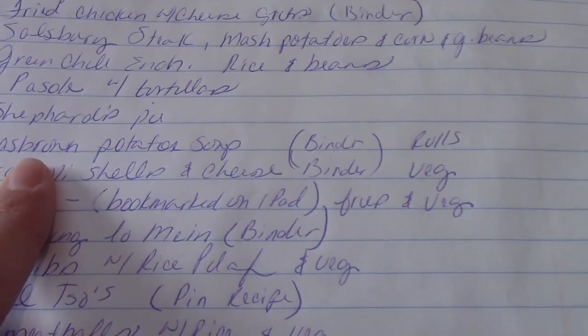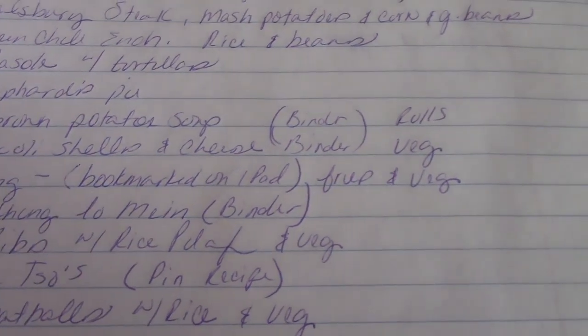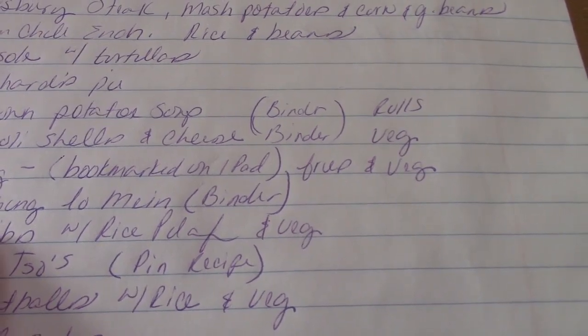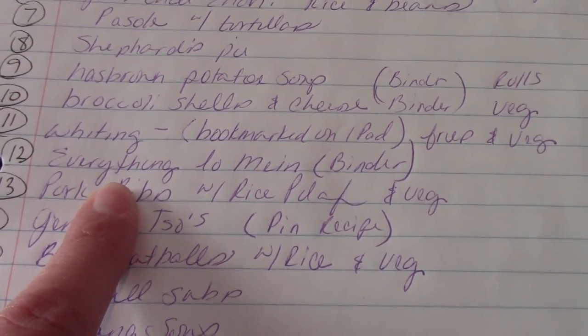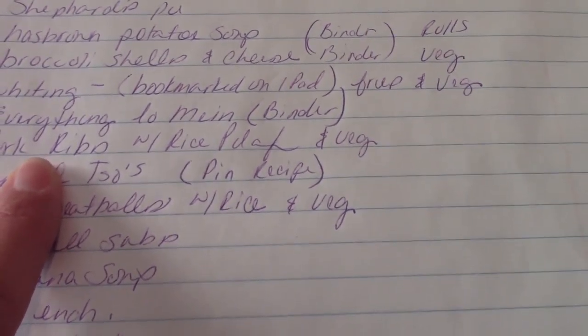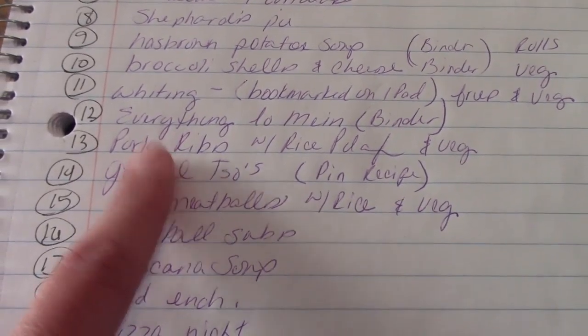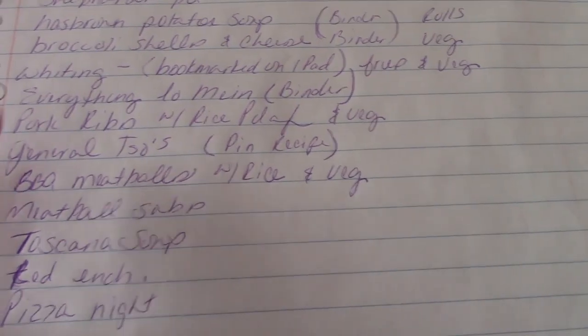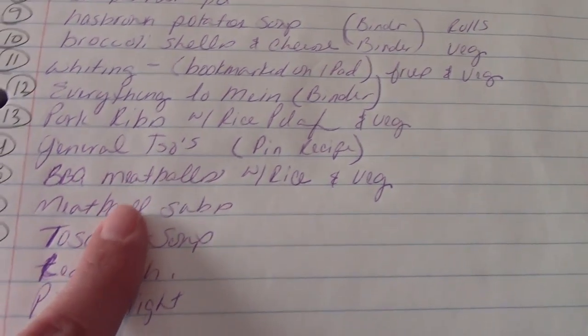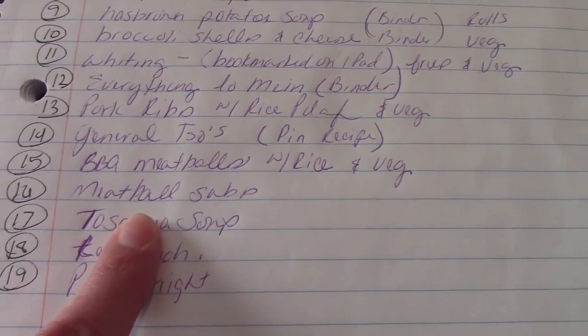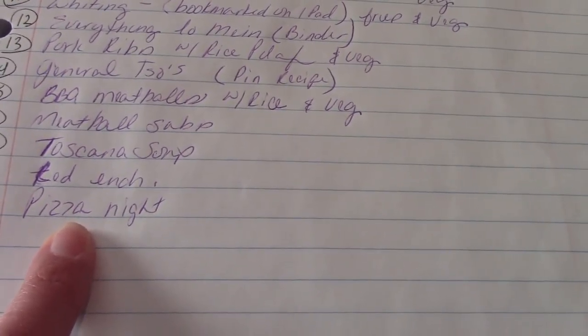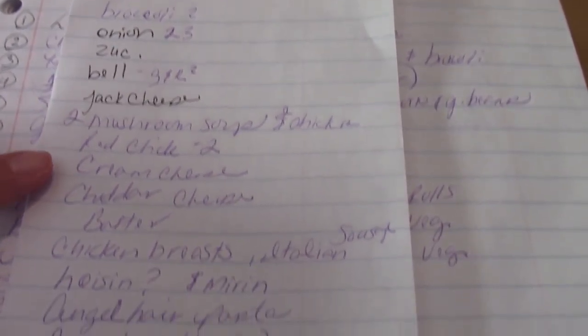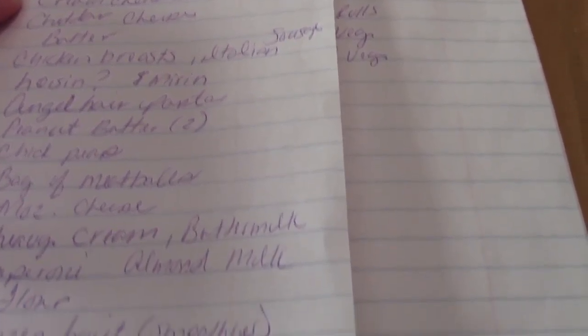Broccoli shells and cheese, whiting fillets, everything lo mein - this is a Rachel Ray recipe that's really good. And I'm gonna do pork ribs with rice pilaf and vegetables. We raised a pig so we've still got a bunch of pork in the freezer. General Tso's chickpeas, and then the barbecue meatballs with rice and a vegetable, meatball subs - we probably won't have, maybe I'll do some fries or something. Toscano soup, red chili enchiladas, and I'm gonna do a pizza night. I just got a new pizza stone from Pampered Chef so I wanna use it.